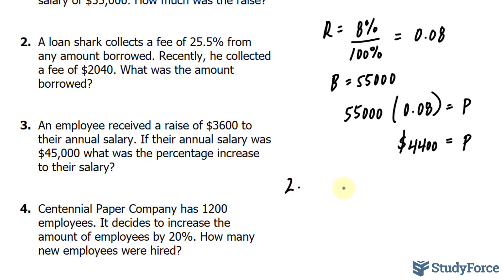So again, to answer this question, we'll be using the formula B times R is equal to P. And this particular person is charging 25.5%, so that needs to be made into a decimal or a fraction. And we can do that by dividing it by 100%. If you divide 25.5 by 100%, you will get 0.255. So we have found the value for R, which is always in relation to the percent. It's 0.255.